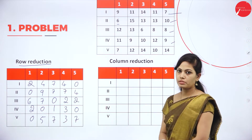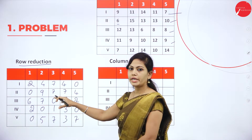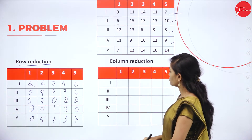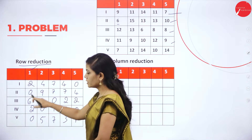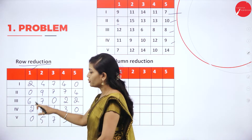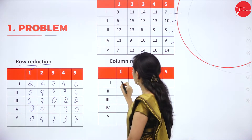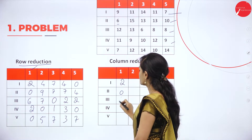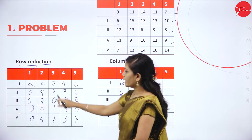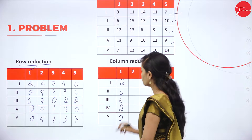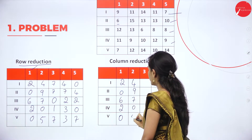The next step is column reduction. By using the row reduction matrix we can find the column reduction. Taking the first column, the least value is 0, so subtracting 0 gives: 2, 2, 0, 6, 2, 0. In the next column we also have 0, so we get the same values: 4, 9, 7, 0, 5.